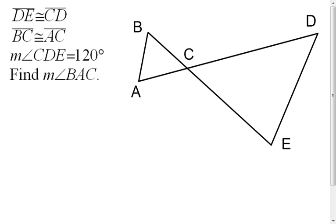I'm going to take that given information and mark it. It tells me that segment DE and segment CD are congruent, so mark those. They may or may not look congruent, but we're going to go by what it tells us and not by what it looks like. We know that segment BC and segment AC are congruent.